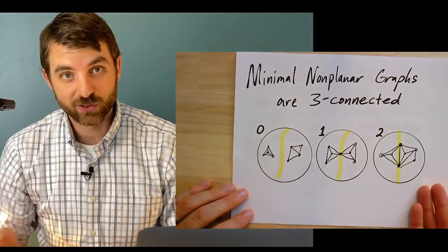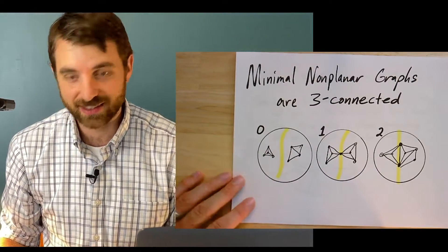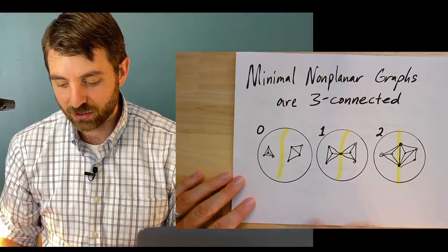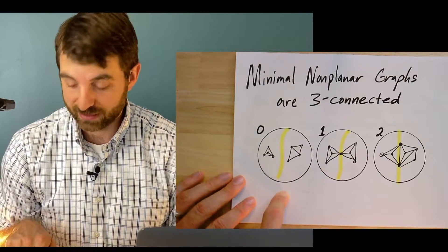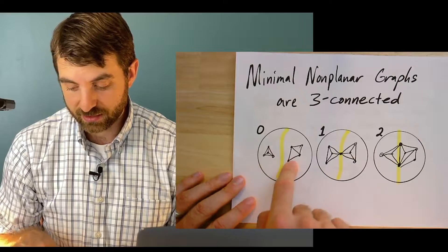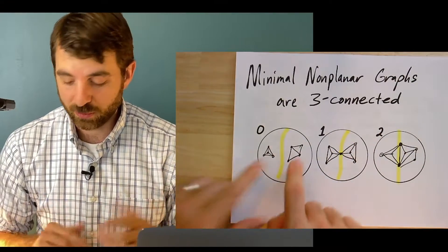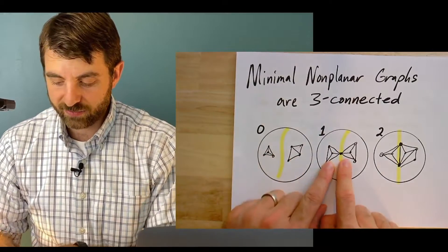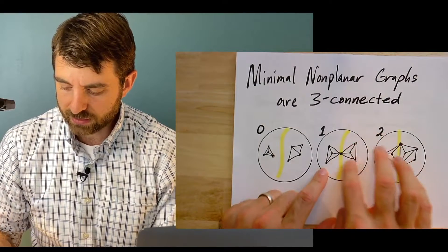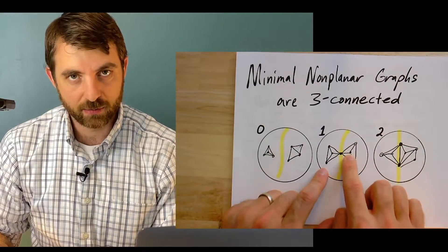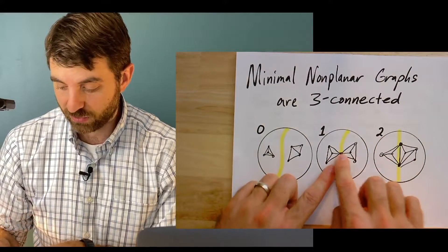I've drawn here a little sketch of what the proof is going to look like - three cases. We're going to show that if the graph is not connected, it's not going to be minimal because I'll just take the different components. Different components are smaller. Each of those will be planar. I do the embedding. If it's only one connected but not two connected, I kind of look at the cut vertex.